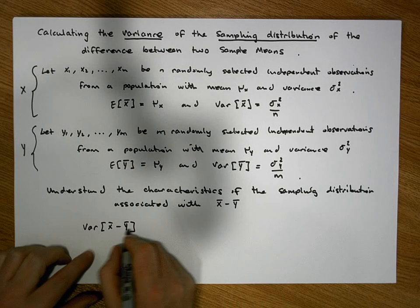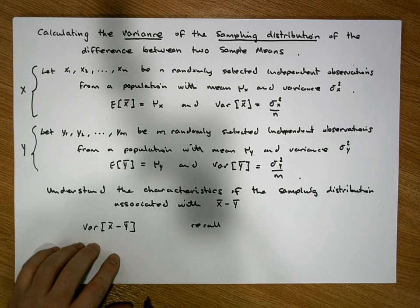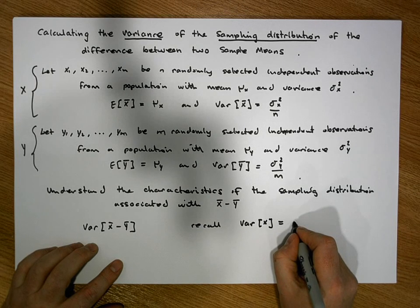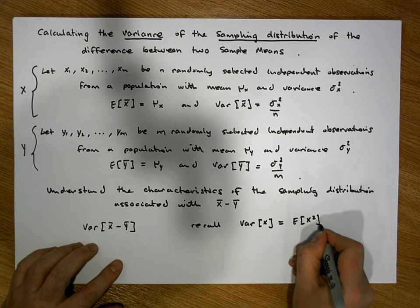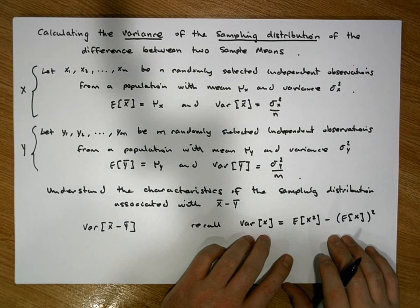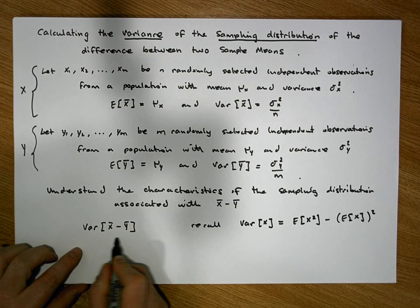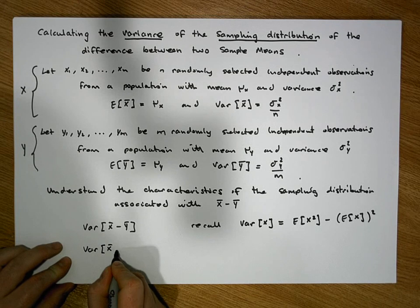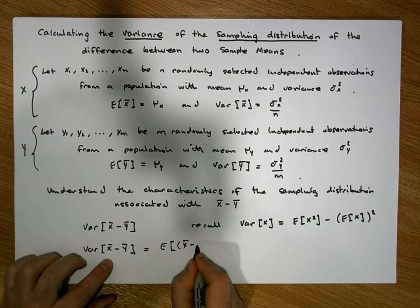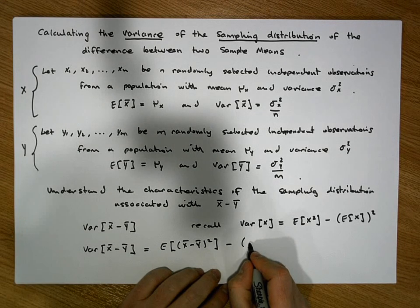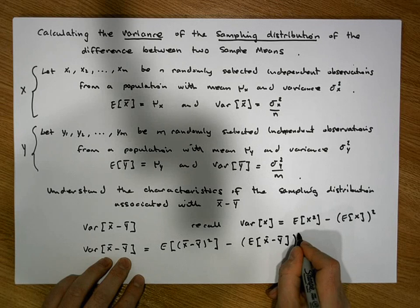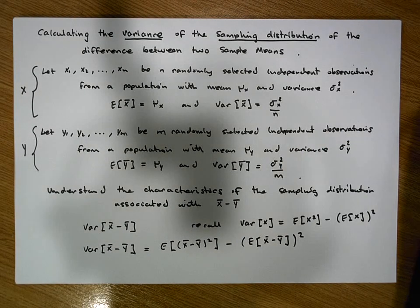Let's recall that the variance of a random variable, represented from an expectation perspective, is equal to the expected value of the square of the random variable minus the square of its expected value. This is an identity proven in an earlier video. Applying this, the variance of X-bar minus Y-bar must equal the expected value of (X-bar minus Y-bar) squared, minus the square of the expected value of X-bar minus Y-bar.